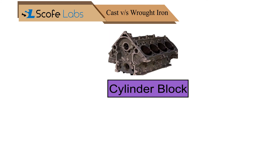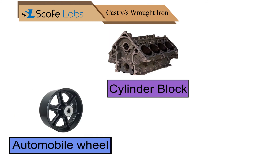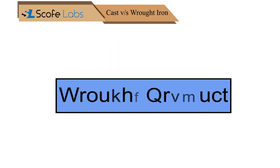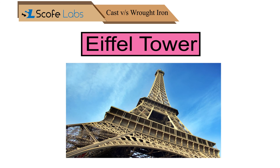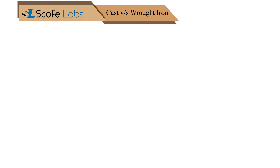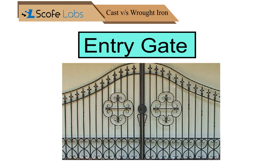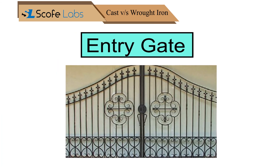Cast products are used for various applications such as cylinder blocks, automobile wheels, and pumps. Wrought products are seldom used; the Eiffel Tower is one of the best examples of a wrought product, and another example is the entry gate used in buildings.